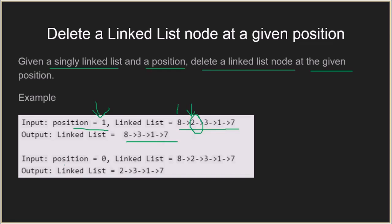Similarly, if position is equal to zero and the given linked list is this, then position zero means that the first element is to be deleted. We delete 8 from the linked list and the remaining linked list will be 2, 3, 1, and 7.